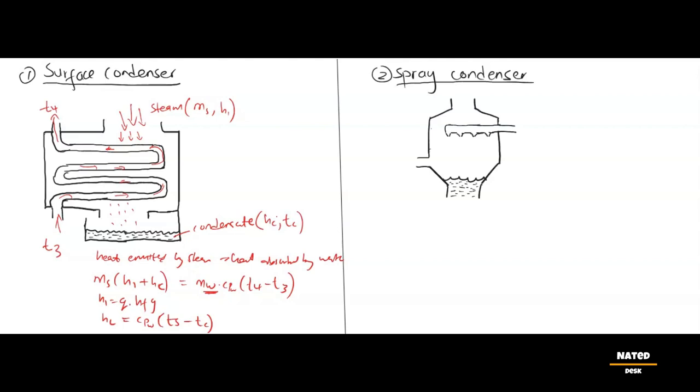After the equal sign, we have the cooling water heat. mw is mass of cooling water. cpw is specific heat capacity of water at 4.187 kJ per kg kelvin. t4 is outlet temperature of cooling water, and t3 is the inlet cooling water.